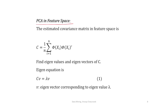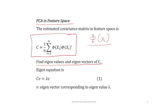This feature space has higher dimensionality than the input space, that is N_H > r. We make this transformation from the input vector to φ(x_i) in the N_H-dimensional feature space, and then apply simple linear PCA. For PCA in feature space, the estimated covariance matrix is C = (1/n) Σ_{i=1}^{n} φ(x_i) φ(x_i)^T. Then you find the eigenvalues and eigenvectors of C.